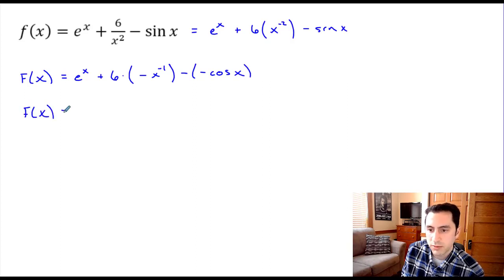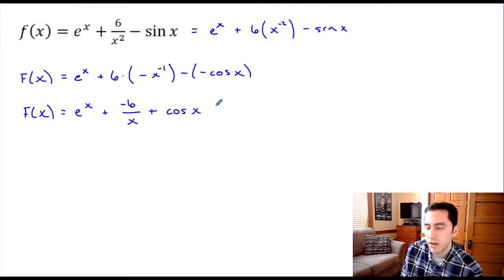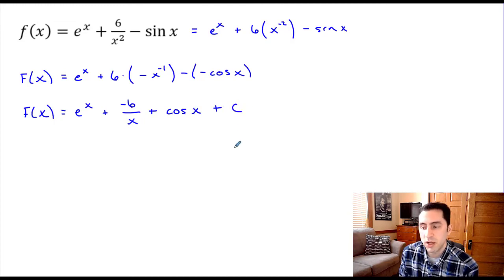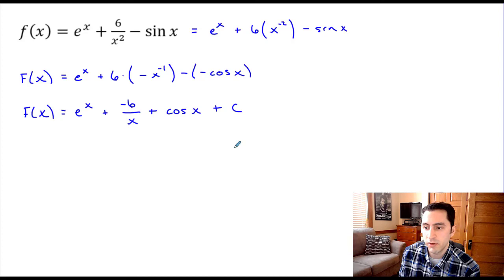Rewriting the result: we have e to the x, then negative six times x to the negative one which moves into the denominator, and then minus a negative turns into plus cosine of x. We include the arbitrary constant C. So that is our antiderivative.